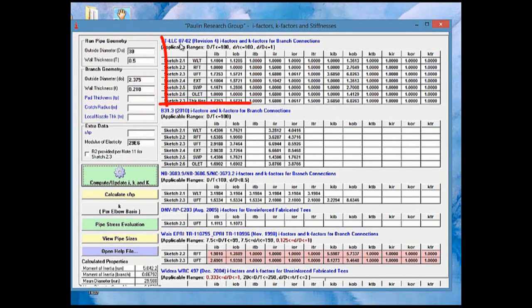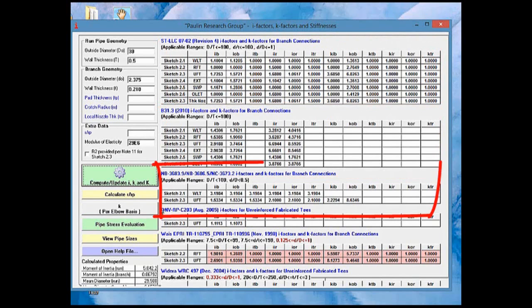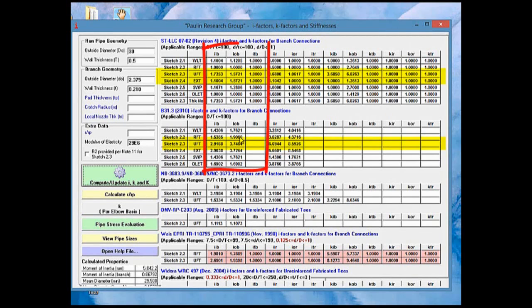So we enter the data we're interested in and click on the Calculate Update INK spreadsheet button. Calculations are made for STLLC 0702, B31.3. These are the two main spreadsheet entities that we compare. Here's the Nuclear Code. Here's the Norsky Veritas. Here's WACE and EPRI 1109.96 and 1107.55. And here's the WIDERA data.